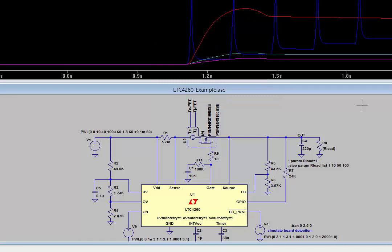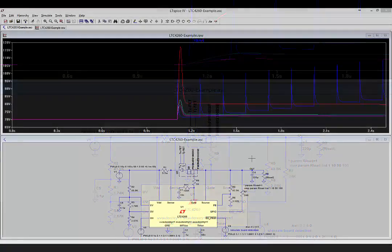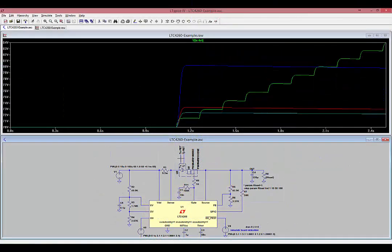Let's change the capacitor back to 10 nanofarads and run the simulation again. Instead of looking at the TJ-FET node, this time look at the TC-FET node. This is the case temperature of the MOSFET. With a 1 ohm load and auto-retry enabled, the case temperature walks up with each retry. If this is a possible scenario in your application, either disable auto-retry or ensure that the PCB layout and airflow provides adequate cooling.